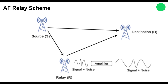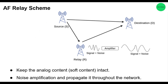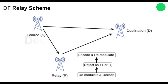In the amplify-and-forward system, the signal is simply amplified and forwarded through the amplifier to the destination. Because of this, both the signal and the noise are amplified together — we get the amplified signal plus amplified noise. A key advantage of amplify-and-forward is that it does not perform any processing at the relay, so it keeps the soft content — the analog content of the information — intact. The disadvantage is that it also amplifies the noise and propagates it through the network.